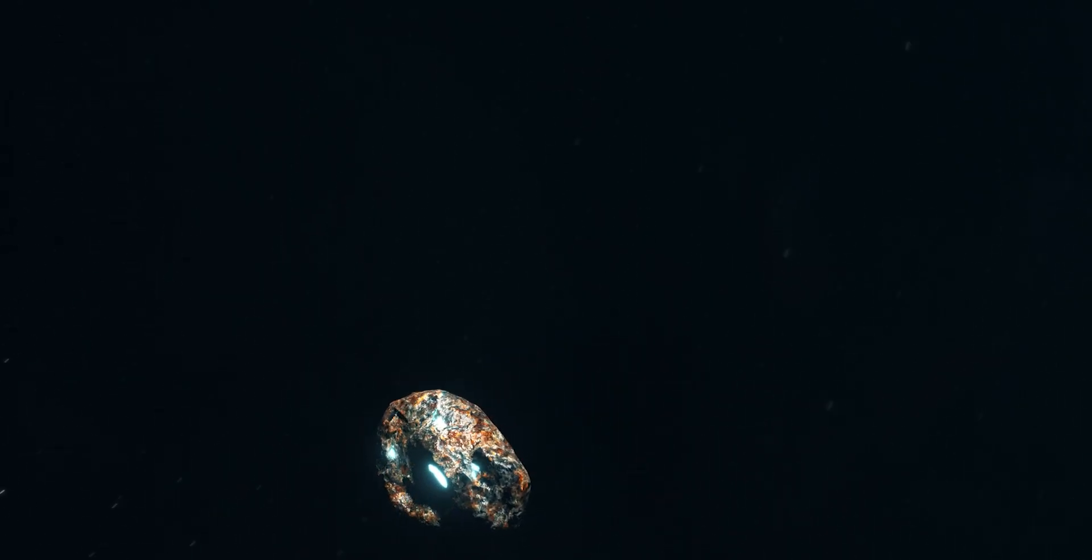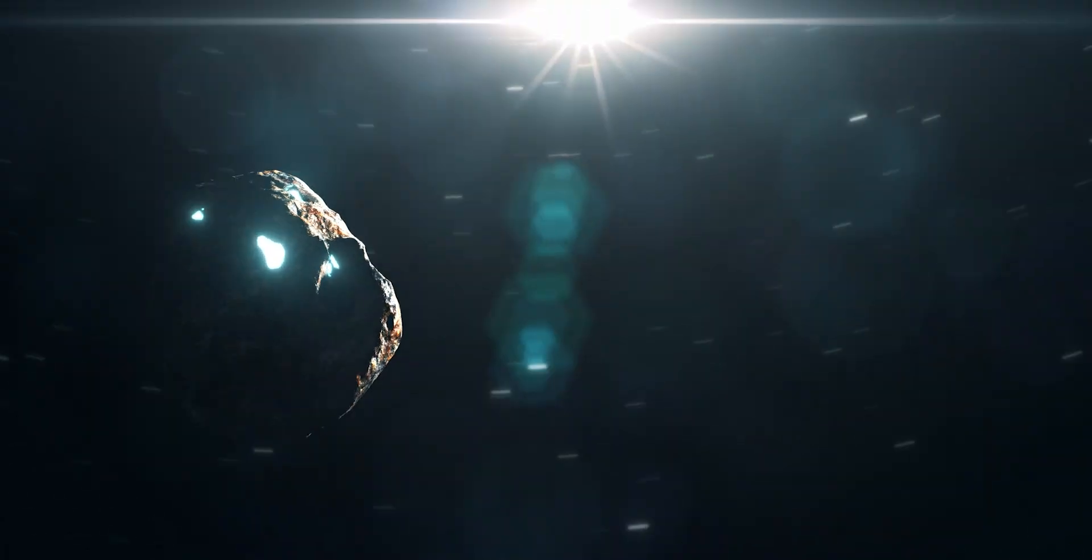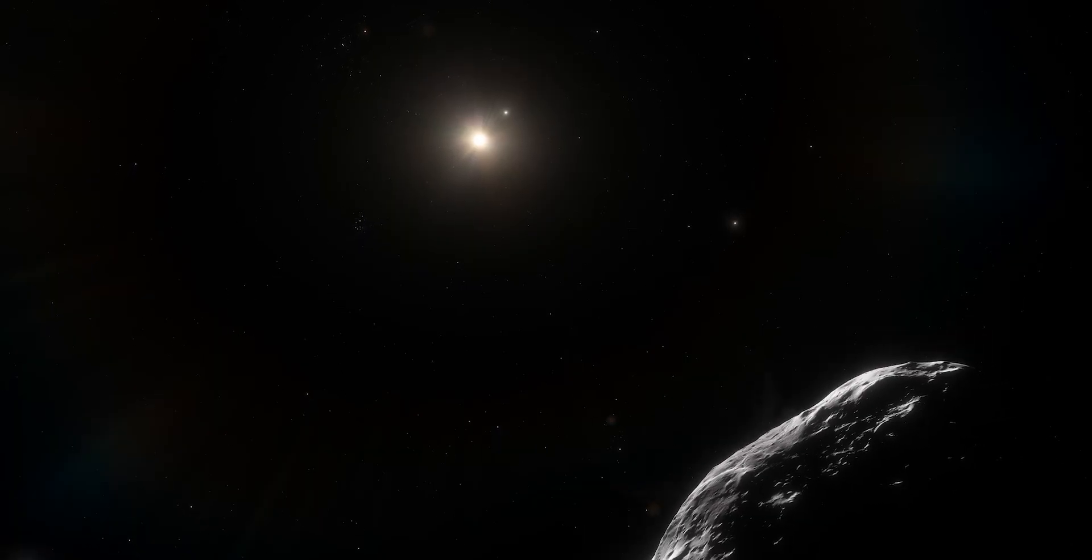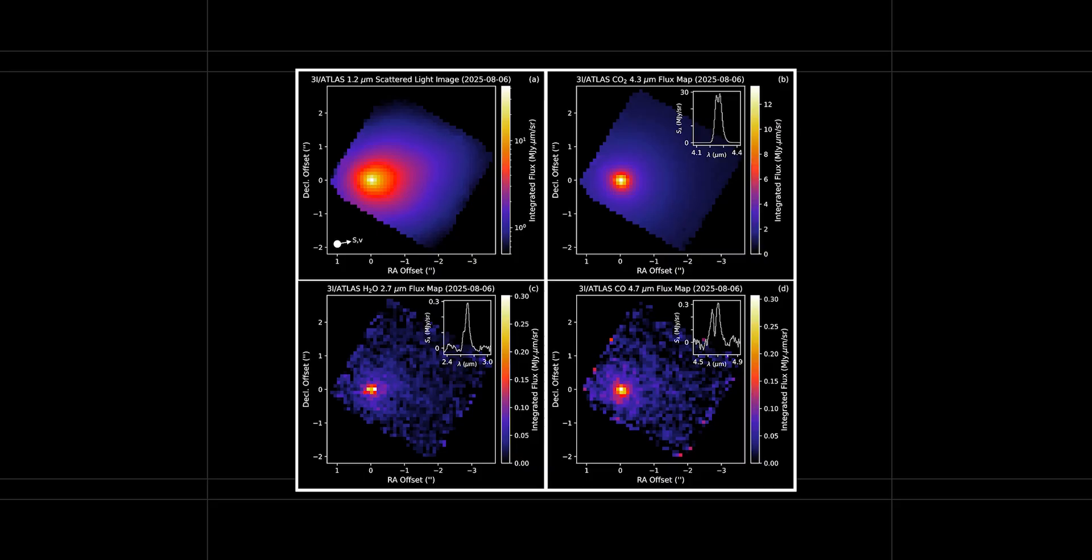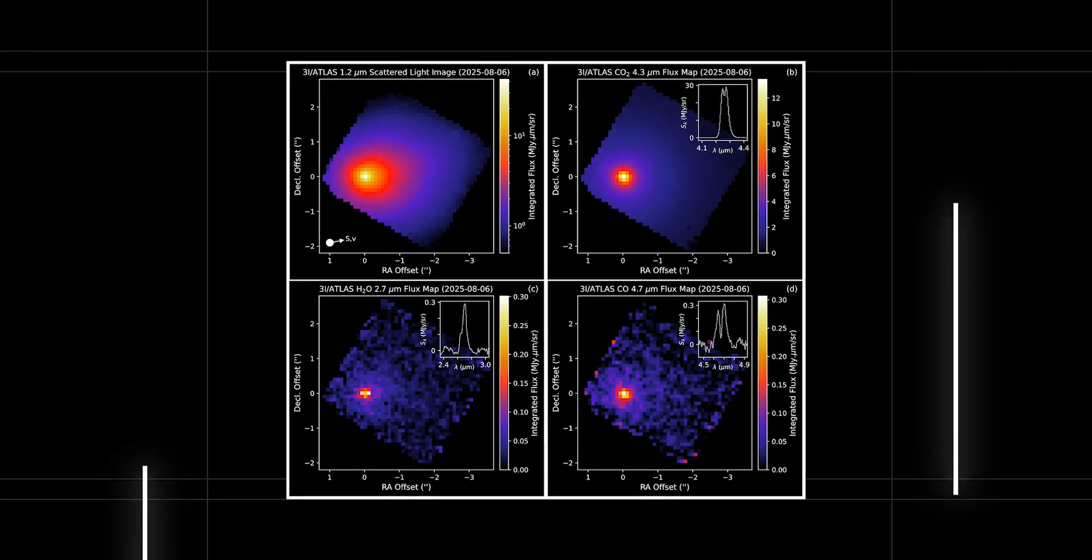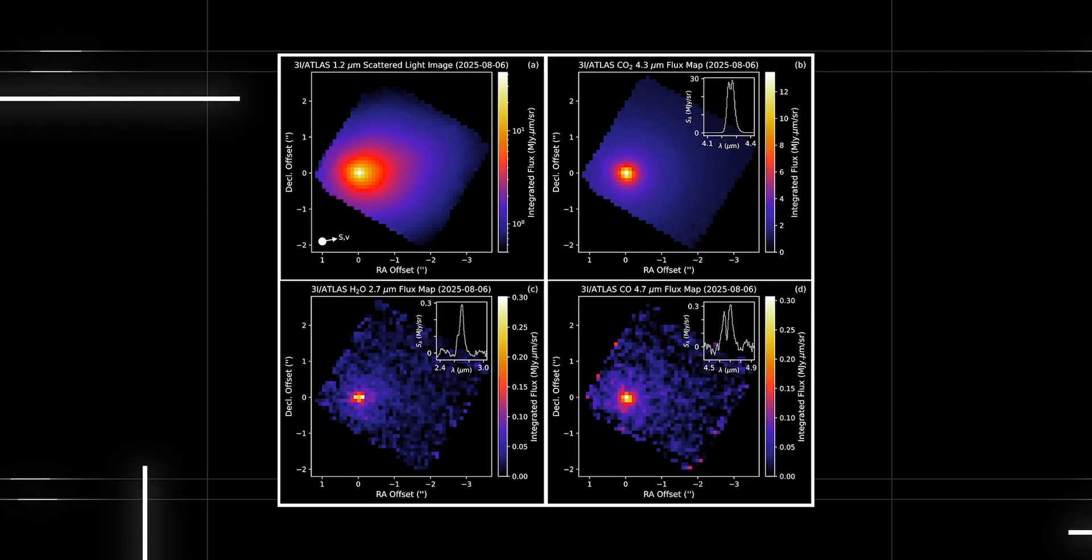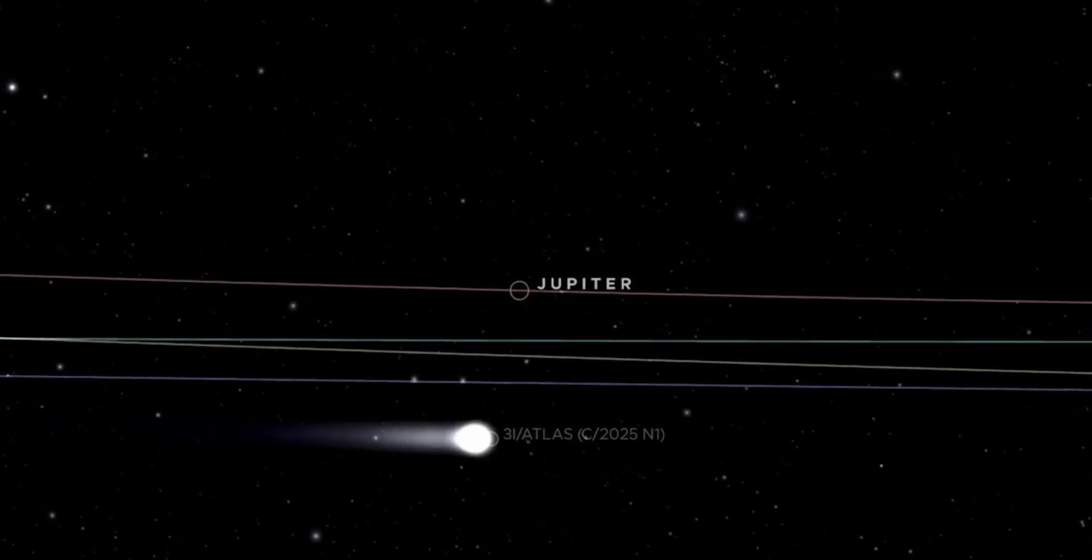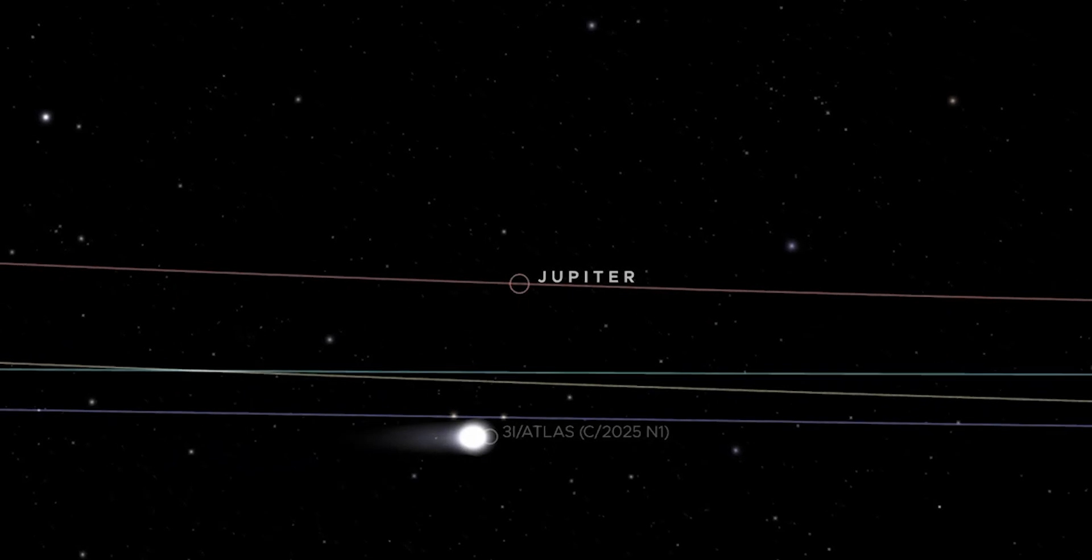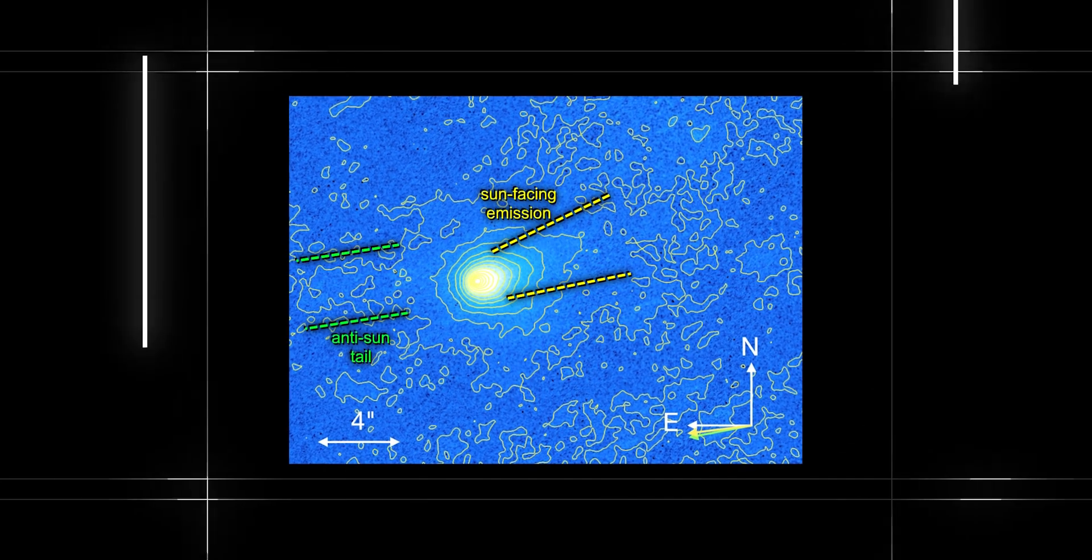For ordinary comets, sunlight first awakens water ice. But out here, the light is too weak for that. Instead, other ices take the lead. Carbon dioxide and carbon monoxide, molecules that evaporate at far colder temperatures. These gases can begin to sublimate while a comet is still beyond Jupiter's orbit, launching dust and vapor long before any visible tail appears.